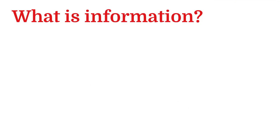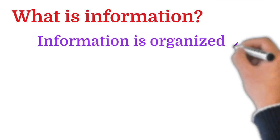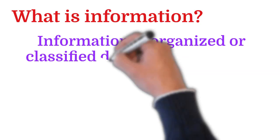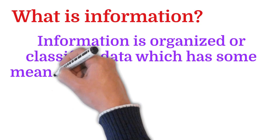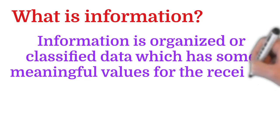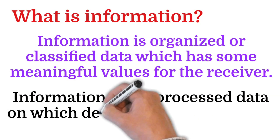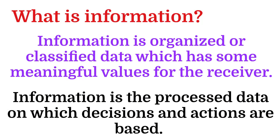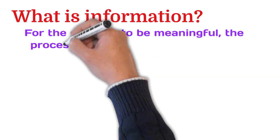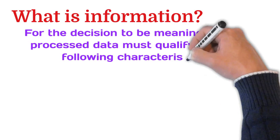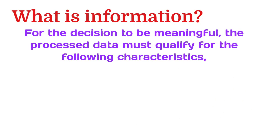What is information? Information is organized or classified data which has some meaningful values for the receiver. Information is the processed data on which decisions and actions are based. For the data to be processed, it must qualify for the following characteristics.